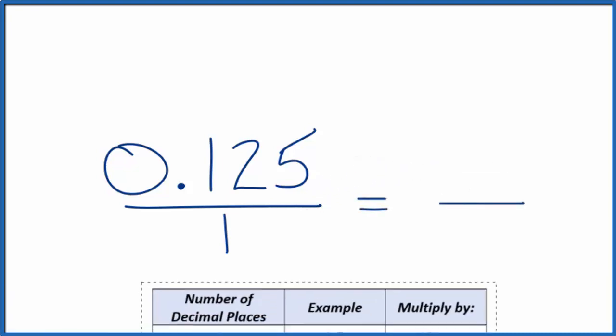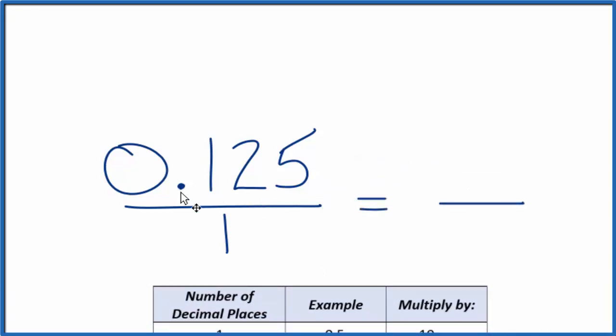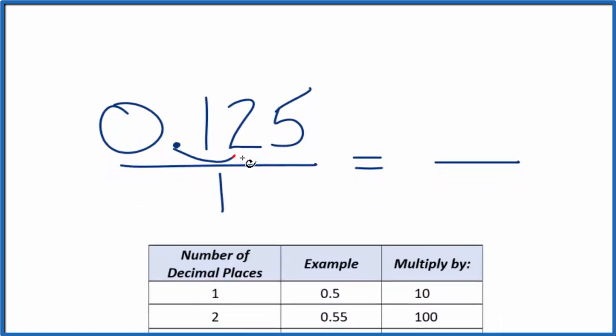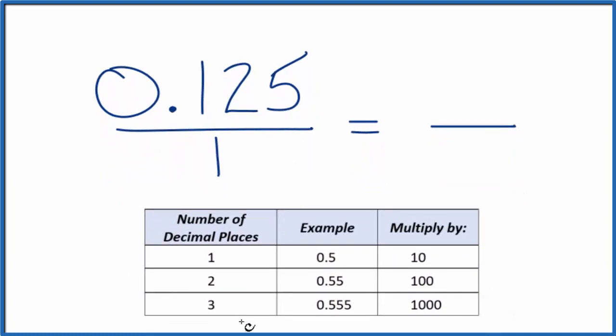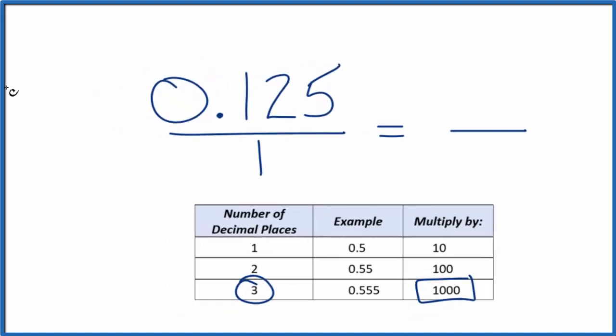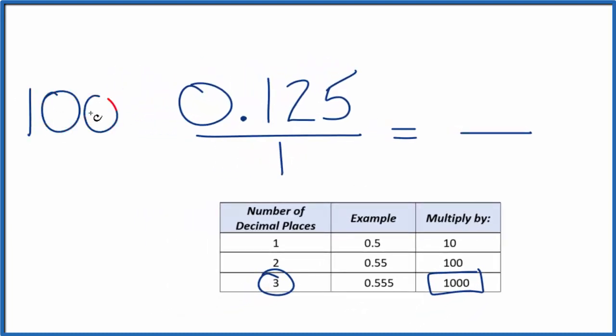This table here might be helpful. Since we have 0.125, that's one, two, three decimal places. When we have three decimal places, like 0.555 or 0.125, we multiply by 1,000. So if I multiply this by 1,000, that's going to give me a whole number. 1,000 times 0.125, that's 125.